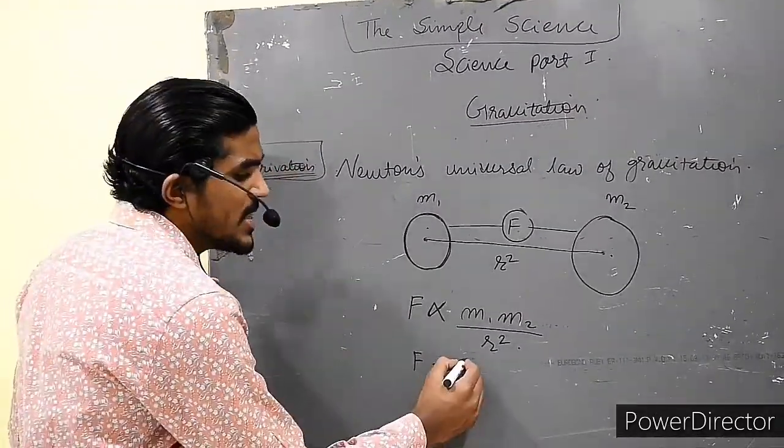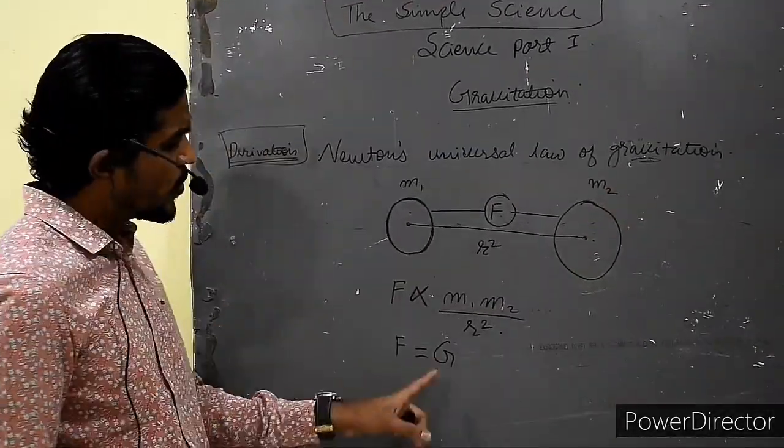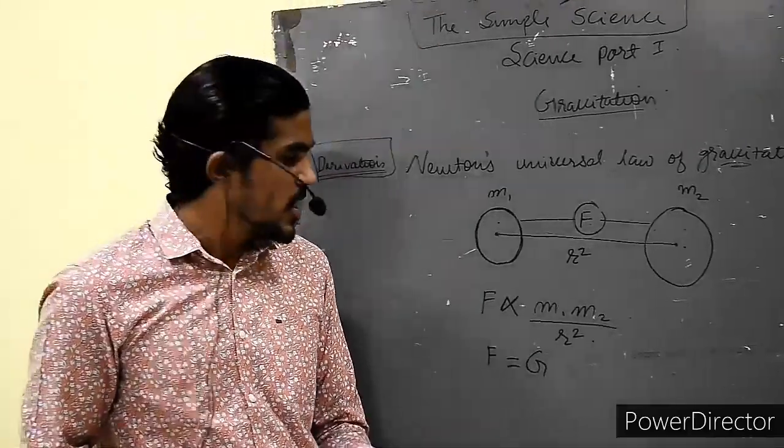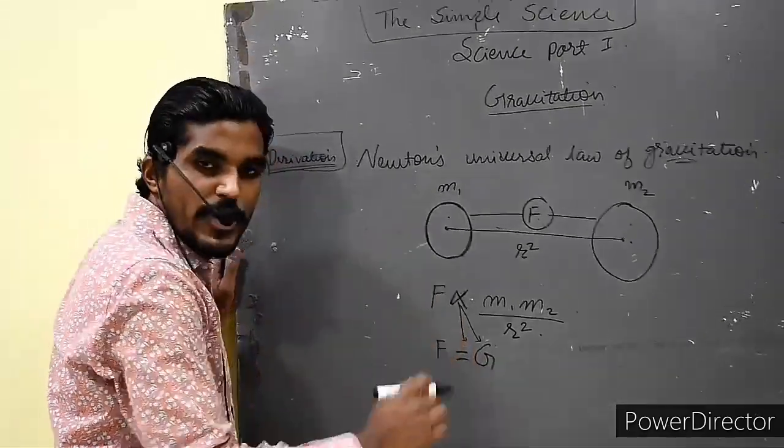So here we are replacing with capital G. Why capital G? Because we are studying the concept of gravitation. So I have put over here capital G. So what it becomes? Instead of proportional, we have put equals and capital G.